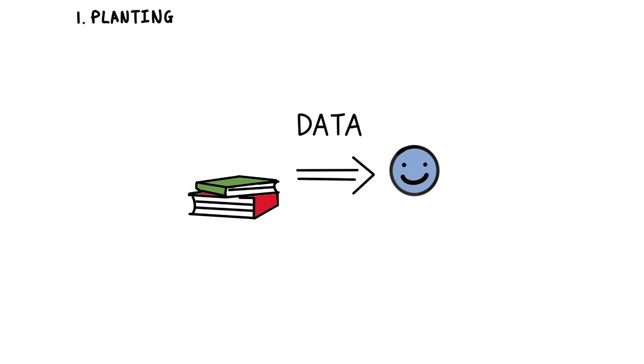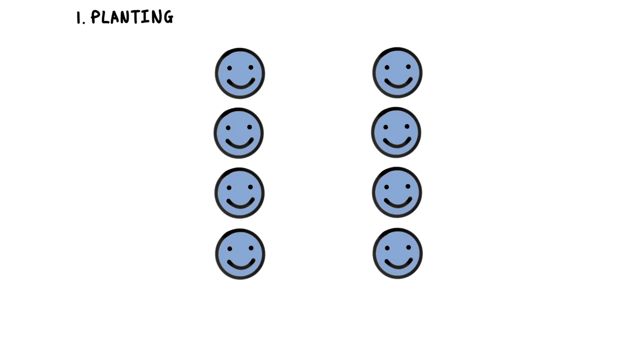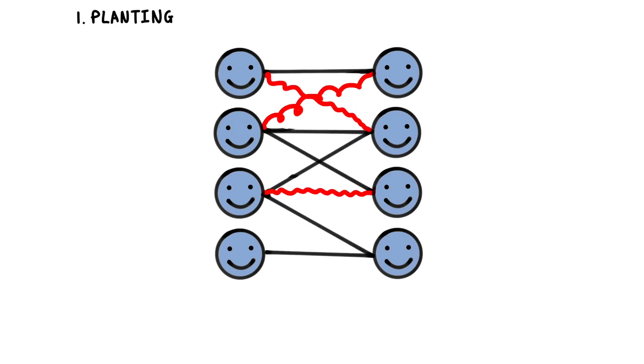Step 1 is planting the seeds. AI learning begins with vast amounts of data, acting as the foundation for learning. These interconnected nodes form AI models, just like our brain's neurons.